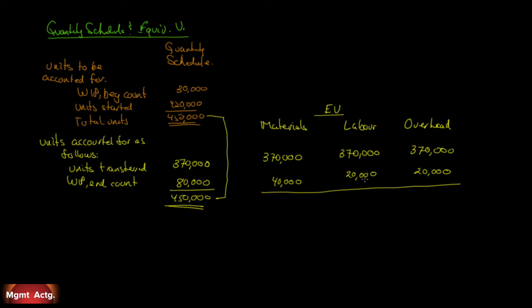How much is done with respect to labor? Of a unit sitting there, how much of its labor has already been added to it? This is all we're doing — figuring out units. Then we'll figure out a cost per unit in the second part. So the first part is just the quantity schedule, which we've done and it reconciles, and the equivalent unit schedule. We just have to add these up: 410,000 equivalent units complete in terms of material, 390,000 in terms of labor, and 390,000 in terms of overhead. That is the first step in completing a production schedule.